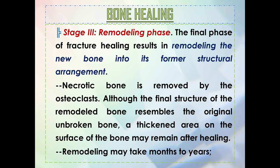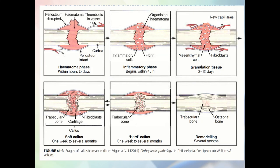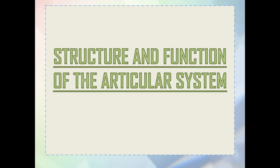The last phase is the remodeling phase, occurring several months after injury. The final phase of fracture healing results in remodeling the new bone into its former structural arrangement. Necrotic bone is removed by osteoclasts. The final structure resembles the original unbroken bone, though a thickened area on the surface may remain. Remodeling may take months to years depending on many factors.